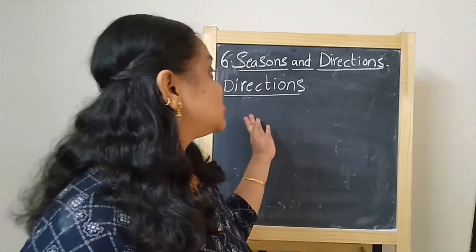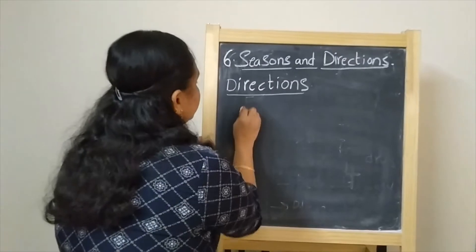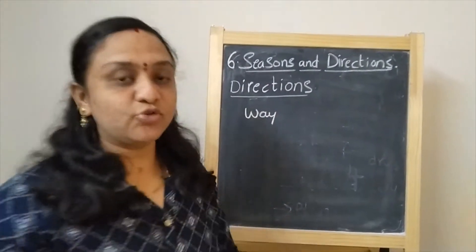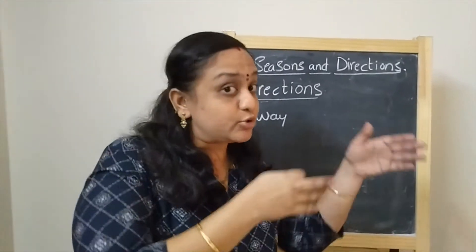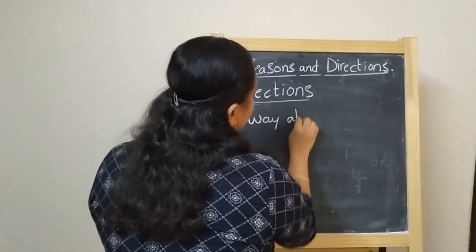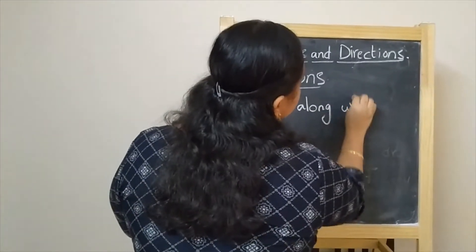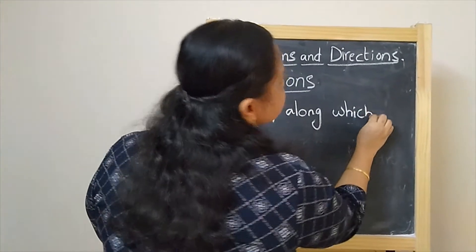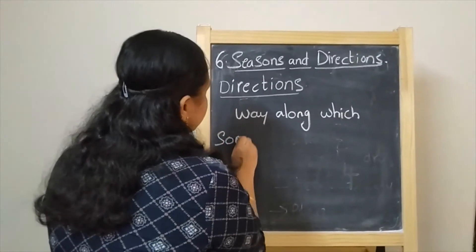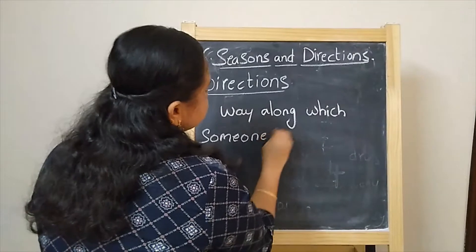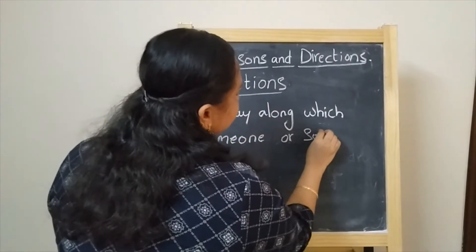Suddenly, one of your friends fell down and got hurt. What will you do? You will take him to the medical room. How will you take your friend to the medical room? Do you know the way? Yes, you know the way to the medical room. Directions are nothing but the way — the way along which we are moving. So you are moving from the playground to the medical room. Directions is the way along which someone or something moves.